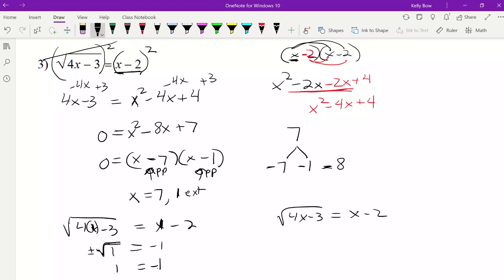Let's try 7. So now we have 4 times 7 subtract 3. So that's 28 subtract 3. So that's square root of 25, 5, which is 5. And then 7 subtract 2 is 5. So in this example, the answer is x is equal to 7, and x cannot equal negative 1 because it is extraneous. All right, that's it.